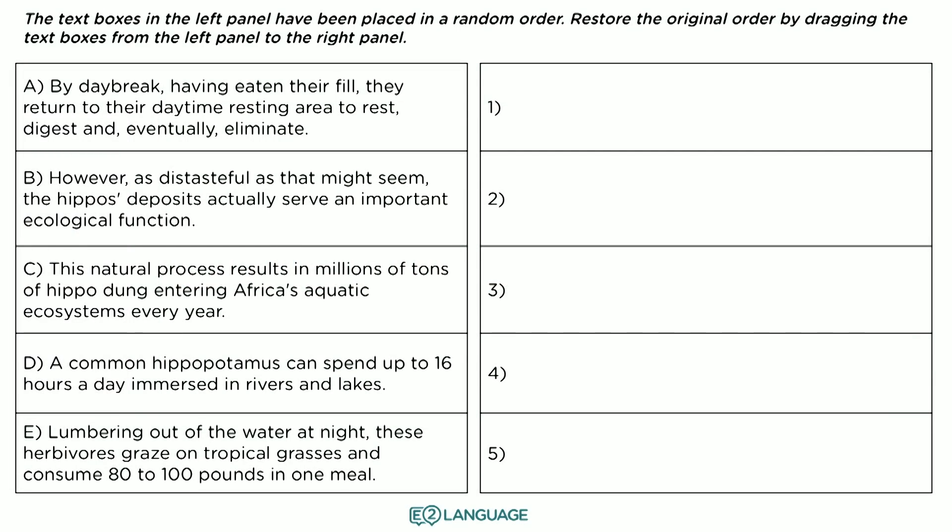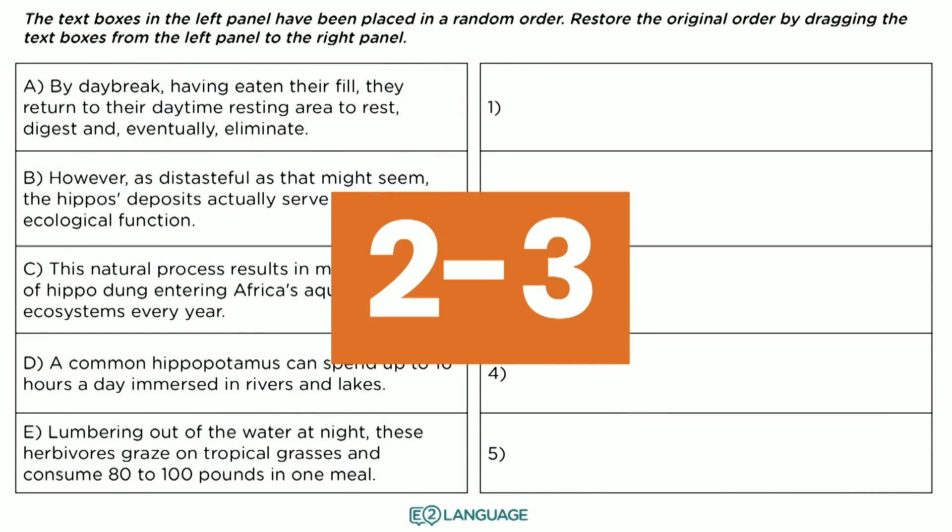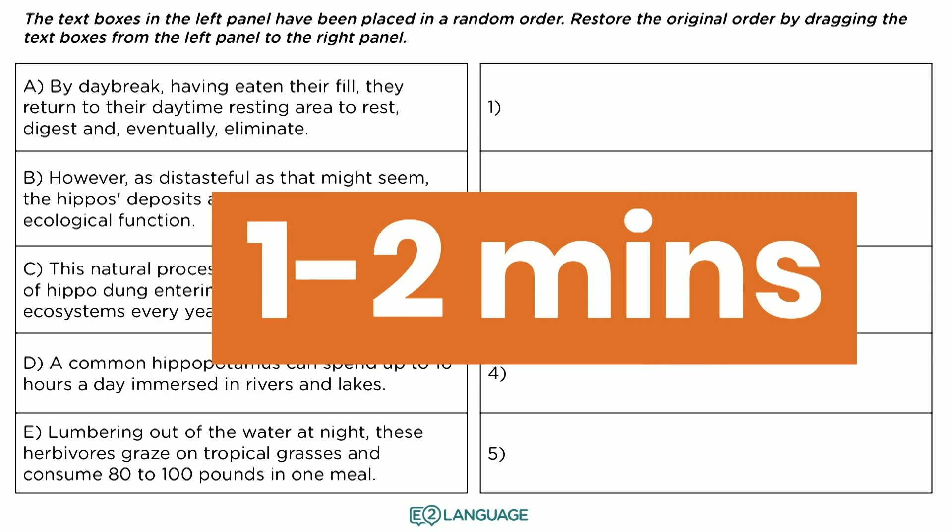This is what it looks like on test day. On the left hand side, you will see individual sentences that are in the wrong order. What you need to do is drag those individual sentences to the right hand side and put them into the correct order, the correct sequence, to create a coherent paragraph. There is a method to this madness. It's a lot of words, five sentences, but you can do it. Just remember that on test day, you'll get two or three of these and you should spend about one to two minutes on them. People whose English is very good will spend about one minute; those who are a bit slow will spend about two minutes — try not to spend any more than two minutes.